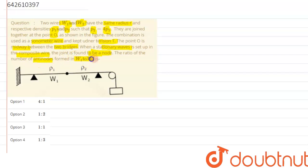The ratio of the number of anti-nodes formed in W1 to W2 is what we need to find. For anti-nodes, we have to be careful that anti-nodes are those points where the displacement is maximum.